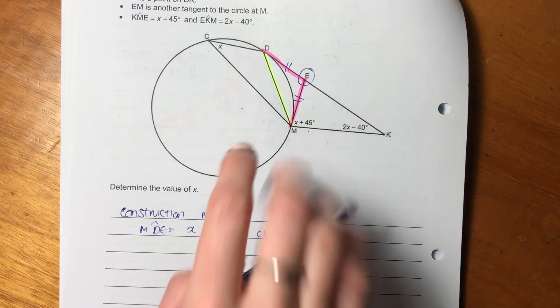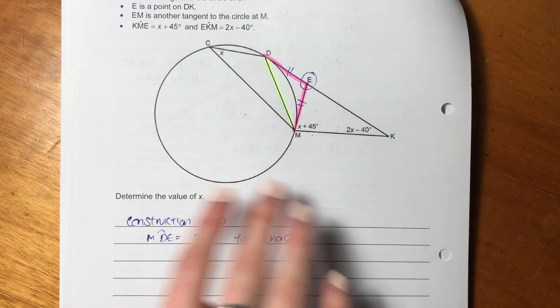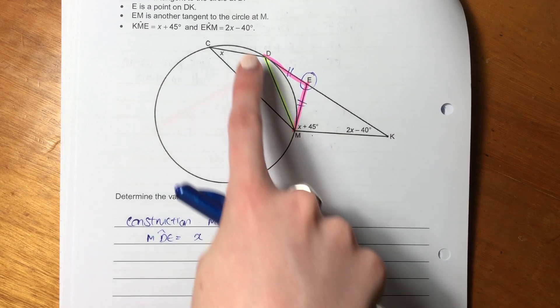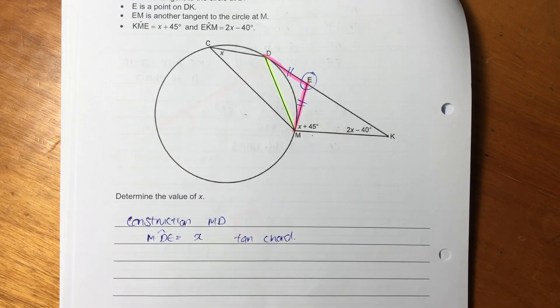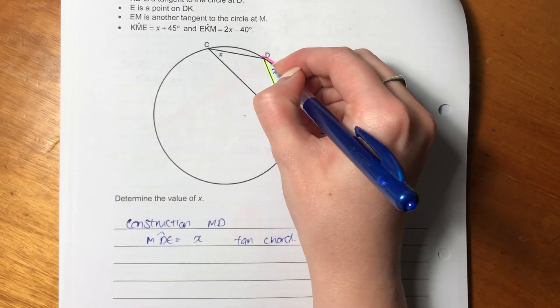So during this construction, the reason I did that is I said there's a bit of isosceles triangles going on there, and maybe a bit of tan chord, because I know that these two things are equal, so I drew that in myself. So I drew that in, and now I say angle MDE equals X.